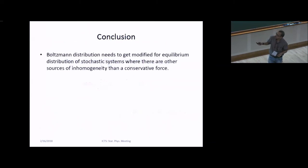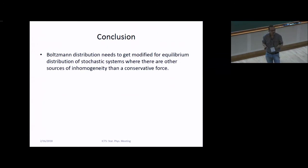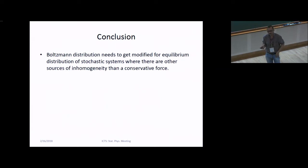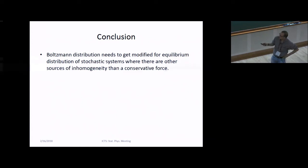To conclude: if there is an inhomogeneity due to diffusivity and damping, the distribution must be modified from the standard Boltzmann distribution. It becomes a modified Boltzmann distribution with an extra agent in the distribution that captures the inhomogeneity of space due to diffusivity and damping. Thank you.